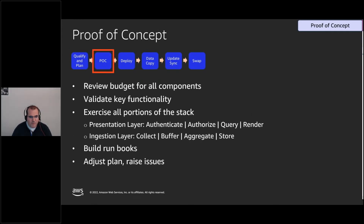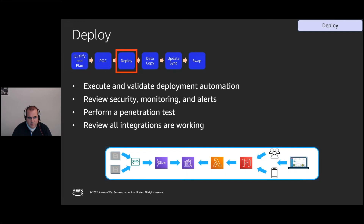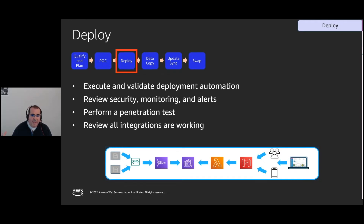During the proof of concept, we validate key functionality, build runbooks, review integrations, and review the budget to ensure alignment with planning. The sooner we discover issues, the better. The result is a validated plan to execute the migration. In the deploy phase, we execute deployment scripts, review security, monitoring, and alerts, perform a penetration test, and verify integrations with other applications and systems. After deploy, the system is ready for data copy, sync, ingestion, and performing a swap.